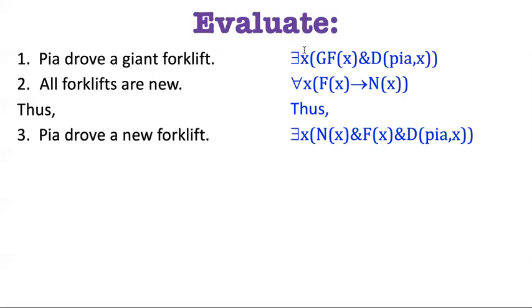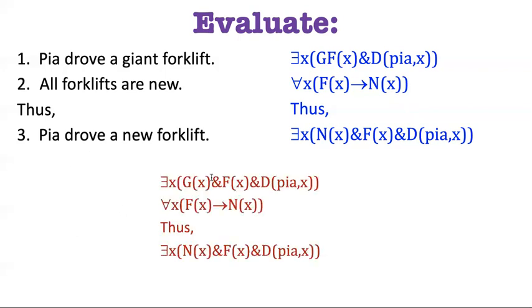Let's say I do know there exists an object that has property GF and that Pia drove it. Well, that doesn't tell me that it has to be new, because I only know that all objects that have property F are new. And this is a different predicate. So what I need to do is actually translate it with a finer grain. I need to actually show that giant and forklift are different predicates.